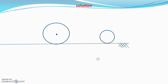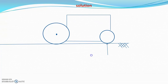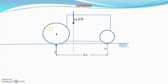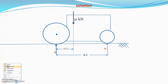Draw the ground surface, then the rear wheel and front wheel connected as a tractor. Label the ground reaction on the front wheel as Rf and the ground reaction on the rear wheel as Rr. The wheelbase is 2.1 meters. The tractor weight of 21 kilonewtons acts at the CG, which is 0.7 meters from the rear axle center.